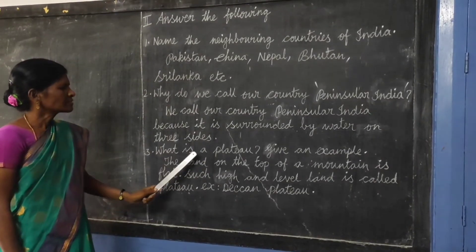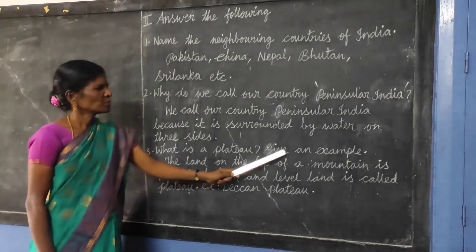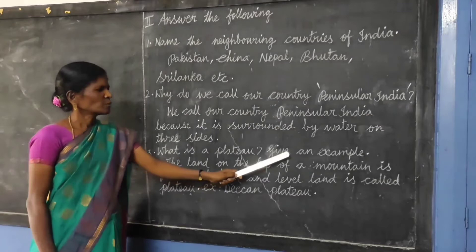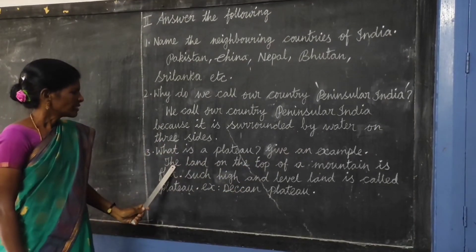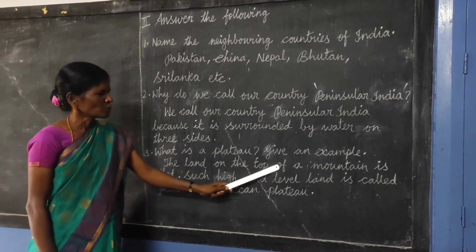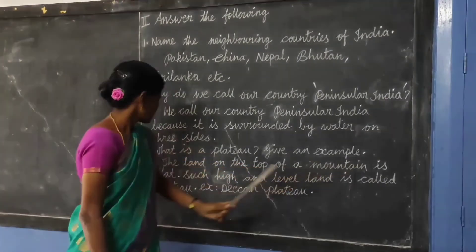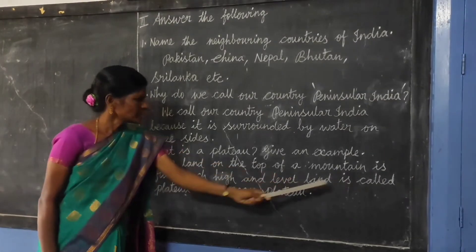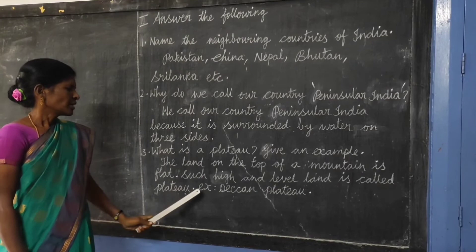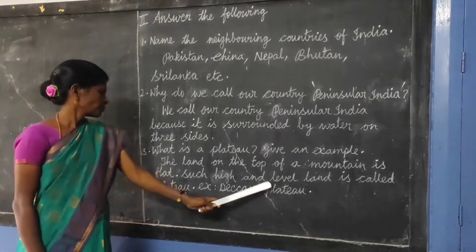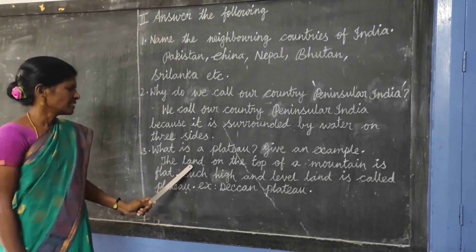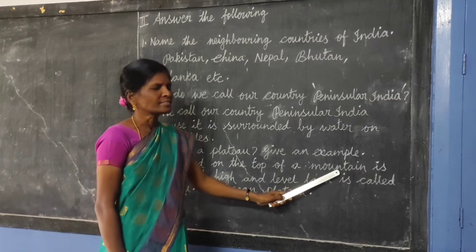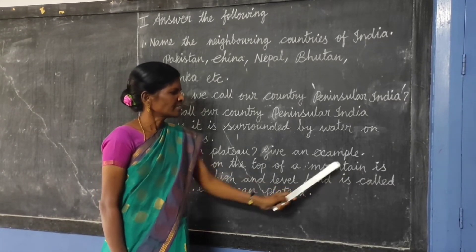Question 3: What is a plateau? Give an example. Answer: The land on the top of a mountain that is flat and level is called a plateau. Example: Deccan Plateau.